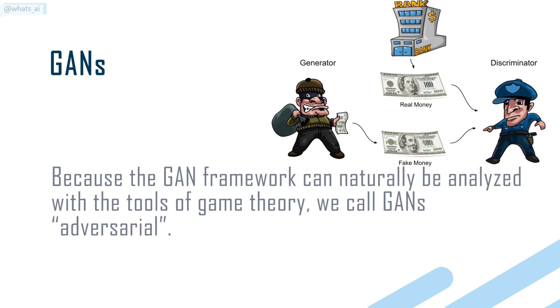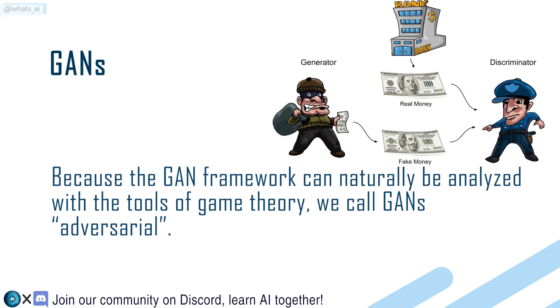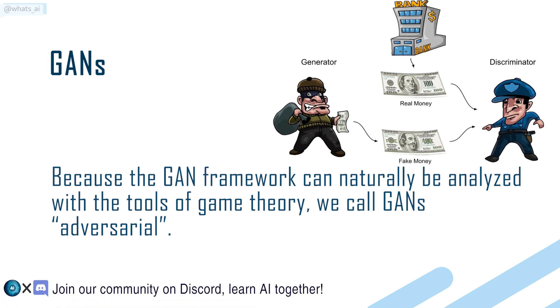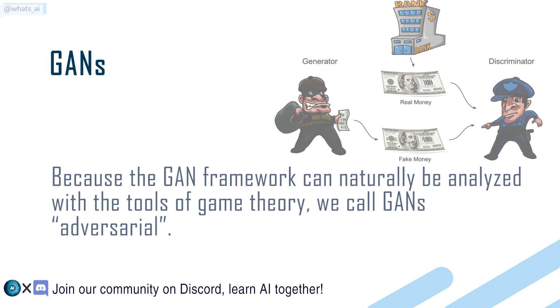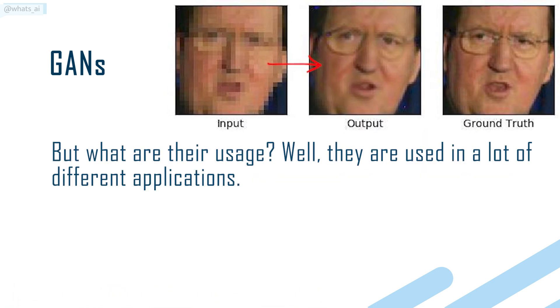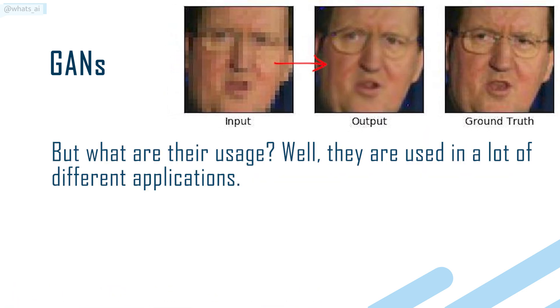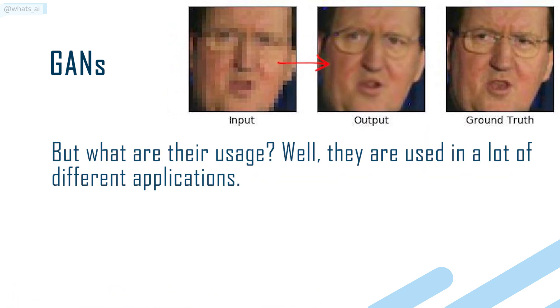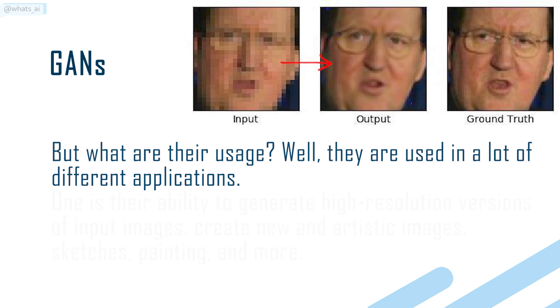Because the GAN framework can naturally be analyzed with the tools of game theory, we call GANs adversarial. But what are their uses? Well, they are used in a lot of different applications.